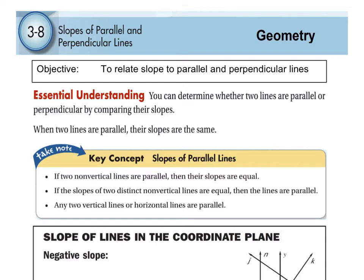Here in part 1 we're going to talk about parallel lines. You can determine whether two lines are parallel or perpendicular by comparing their slopes. When two lines are parallel, their slopes are the same. This is a very important part you might want to highlight in your notes: lines are parallel, their slopes are equal.